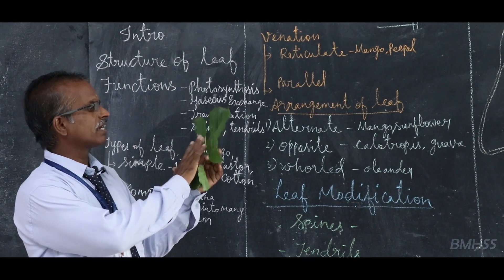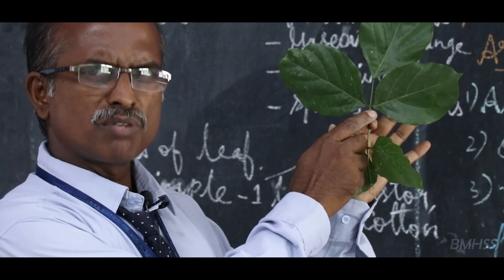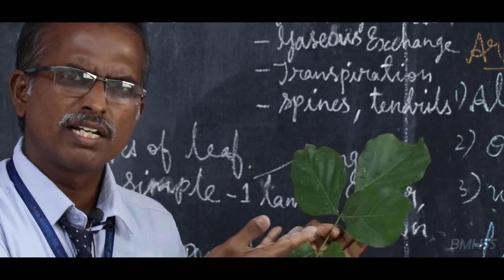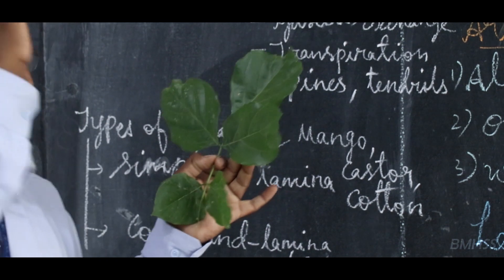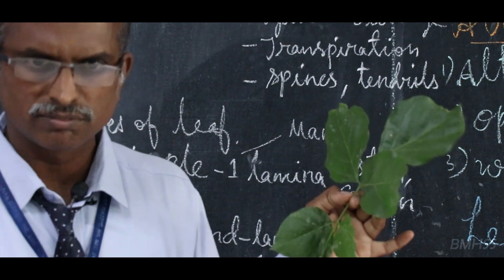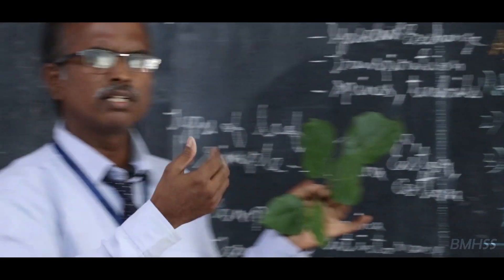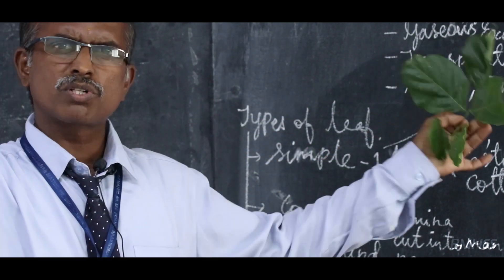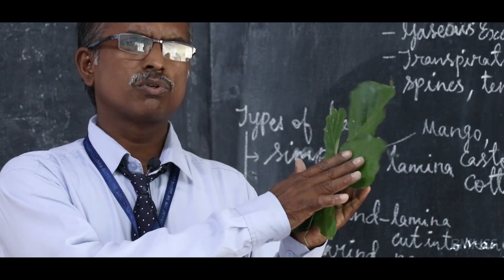The leaf is a flat, green structure. It is mainly attached to the stem or branch. The leaf is green in colour. Does anybody know the reason for the green colour? The presence of one important pigment — chlorophyll pigment. The chlorophyll pigment imparts green colour to the plants. That is why most of the leaves are green in colour, because of the presence of chlorophyll pigment.